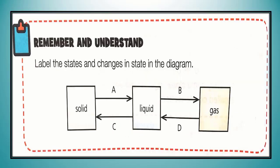Dear students, here is our remember and understand for you. Label the states and changes in state in the diagram. Pyare bachon, jab koi cheez solid se liquid mein convert hoti hai to wo melt ho jati hai. Jab koi cheez liquid se gas mein convert hoti hai to wo boil ho jati hai. Jab koi cheez gas se liquid mein convert hoti hai tab wo condense ho jati hai. Aur jab koi cheez liquid se solid mein convert hoti hai tab wo freeze ho jati hai.